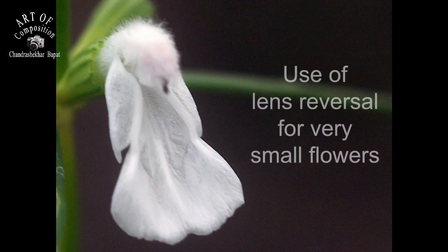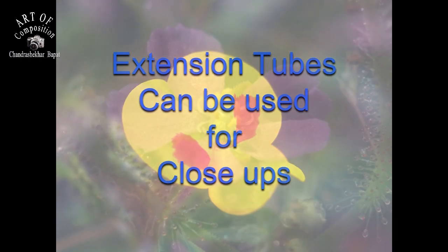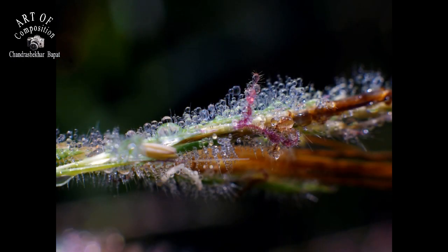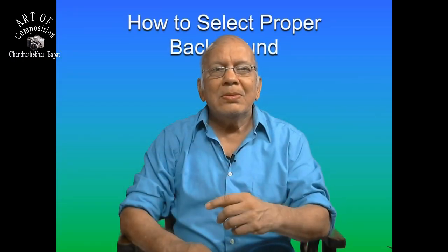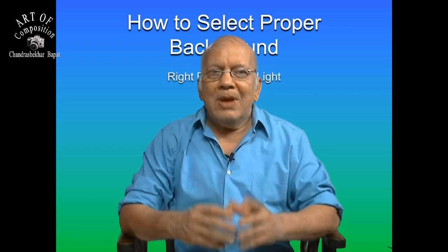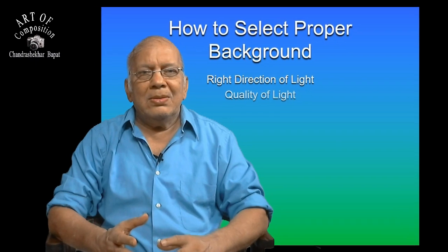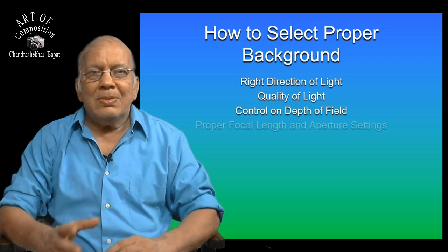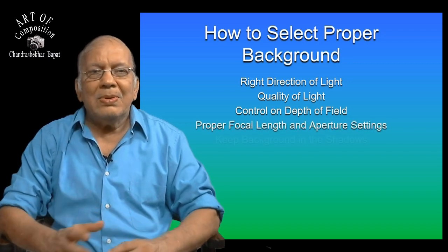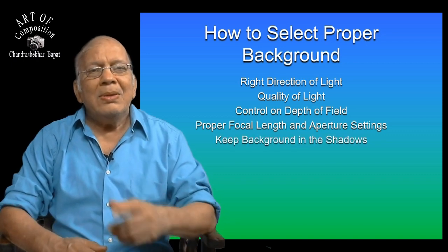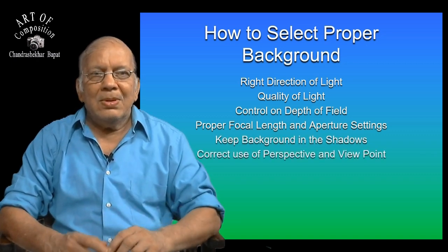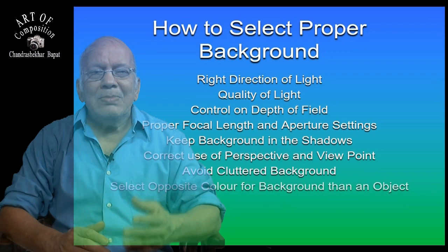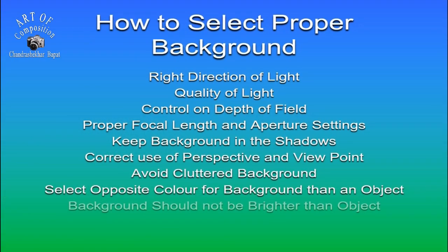By using a reversal ring and extension tube, you can get close to small objects and achieve the desired background. Considering some important factors, you can choose the appropriate background for your photo: the direction and quality of light, controlling the depth of field to create an out-of-focus background, using a lens of the correct focal length and aperture, keeping the light intensity low on the background and creating shadows if it is too bright, and using a suitable perspective and viewpoint to compose the background effectively.